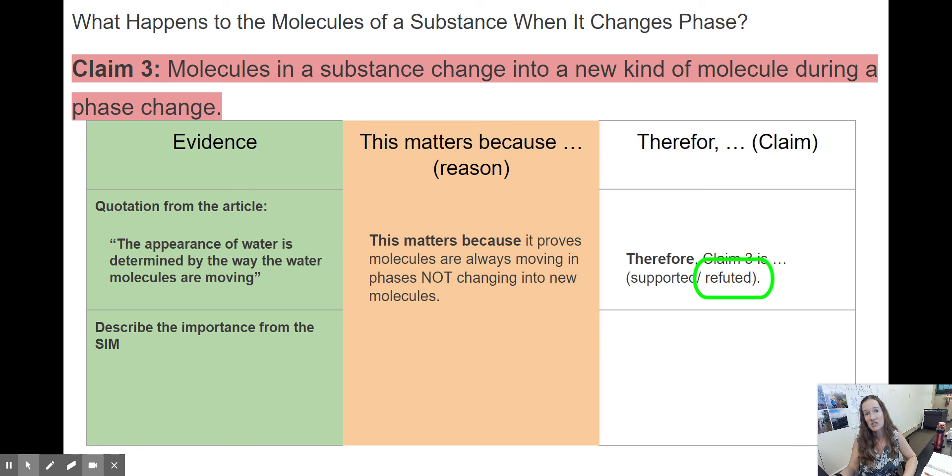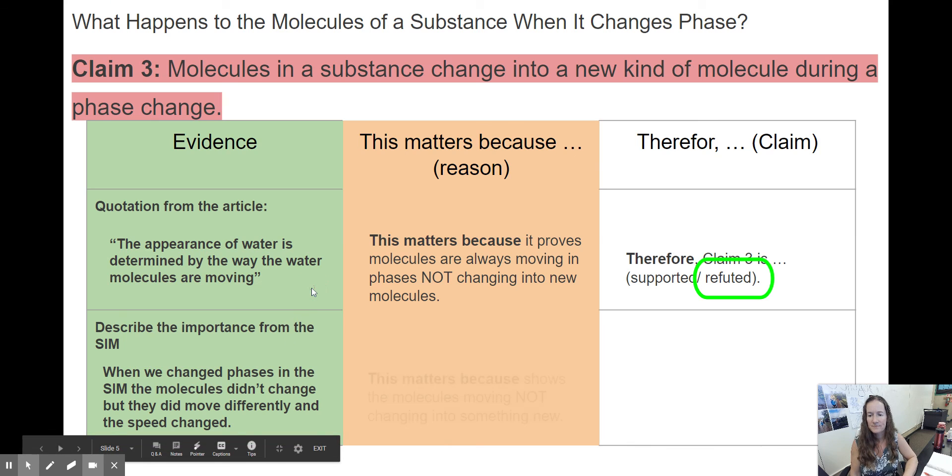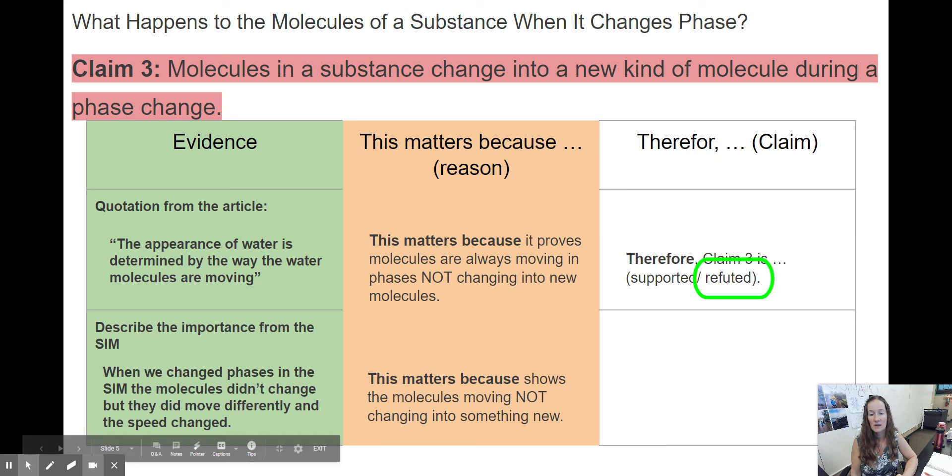We're going to use the simulation again. During class, I elicited this information from your classmates. One of your classmates said, when we change phases in the sim, the molecules didn't change, but they moved differently and the speed changed. They brought in the idea that it's moving differently and they also noted that the speed changed, but the molecule itself did not change.